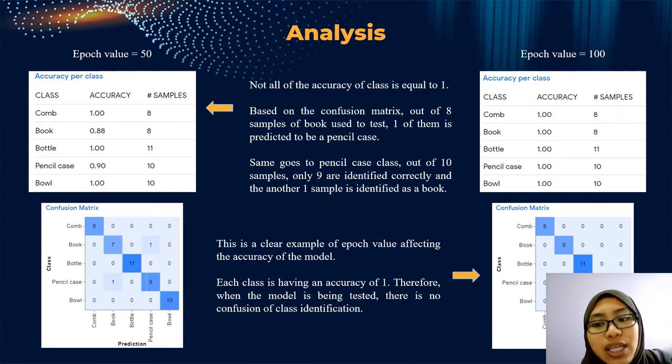And when you refer to the accuracy and confusion matrix when the epoch value is equal to 100, you can see that the accuracy is equal to 1. Therefore, there is no item that is misidentified. You can refer to the confusion matrix where everything except for the diagonal is equal to 0. Therefore, no item is misidentified.